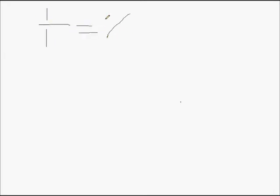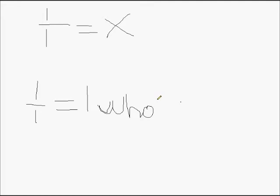Today we are making common fractions into decimal fractions. One over one equals x. One over one equals one whole, because one fits into itself once. So your answer to this sum is one. That is how you make common fractions into decimal fractions.